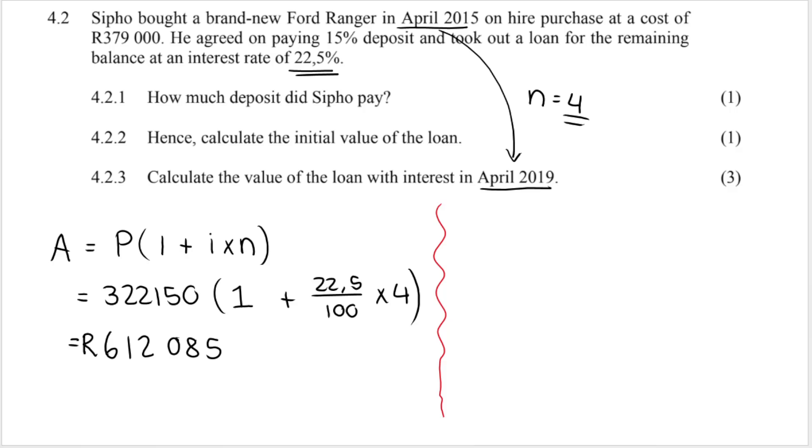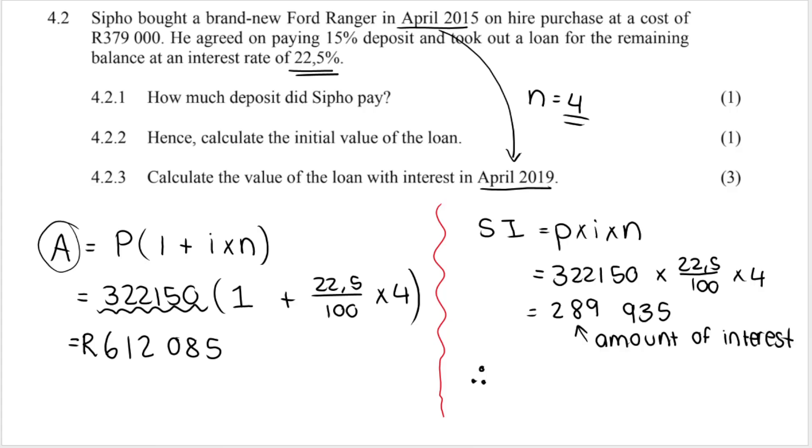Another way of course that you can do this question is you can use the following formula. SI equals P times I times N. Now remember this formula just gets me the amount of interest. Whereas the one on the left hand side gives me A the final amount including interest. So it's basically your starting amount plus whatever interest was accrued on the amount. If you want to use this formula you start with P as normal. After you take your deposit off once again times by your interest rate. Remember to divide that by 100 times by your number of years. And what you get over here is 289935. But remember this isn't your final amount. This is just the amount of interest. Therefore the value of the loan with interest will be what the loan started out as plus the amount of interest that accumulated over time. And when we add those together we get the same final amount that we got over here.